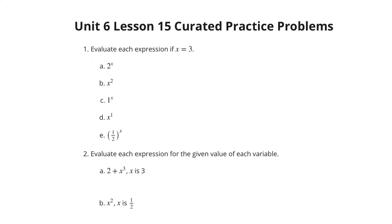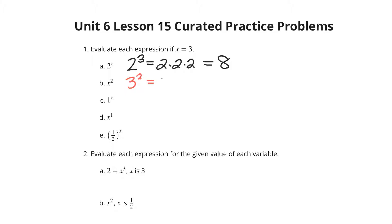Evaluate each expression if x equals 3. In A, if we evaluate that, this would be 2 to the 3rd, which is 2 times 2 times 2, which is 8. In B, put in 3 for x. We have 3 squared, which is 3 times 3, which is 9.